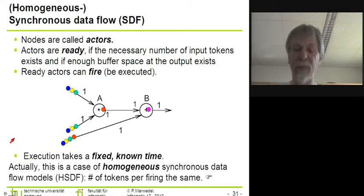So what is synchronous data flow? We can explain the operation of such a model by referring to the graphical representation. In this graphical representation, we again have a dependency graph with nodes and edges. The nodes in this case are called actors and these edges are labeled with certain weights. These weights describe the number of signals or tokens that are consumed whenever we execute the code that corresponds to these nodes. These nodes are said to be ready if the necessary number of input tokens exists and if enough buffer space at the output exists.